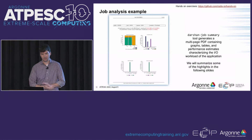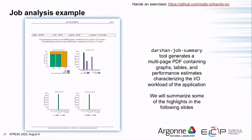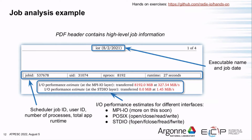Next I'll step through a general job analysis example. We've created a PDF with details on application IO behavior using the Darshan job summary tool — it's a multi-page PDF with graphs, tables, and statistics giving you a high-level overview of the application IO workload. Starting with simple job metadata, the PDF header has the executable name and job date, and a table with job ID, user ID, process count, and runtime.